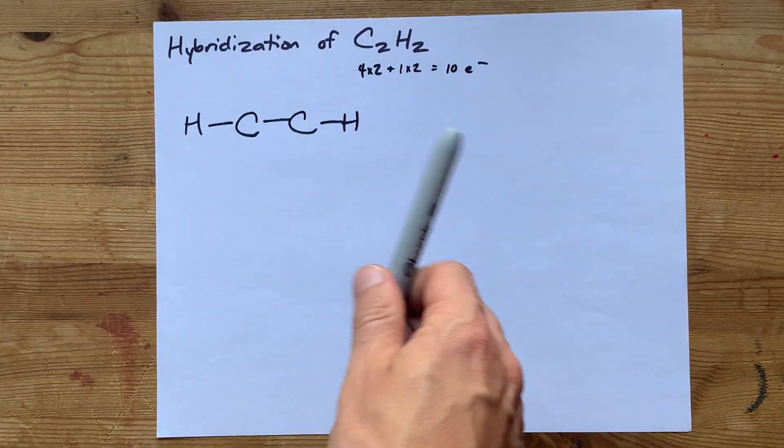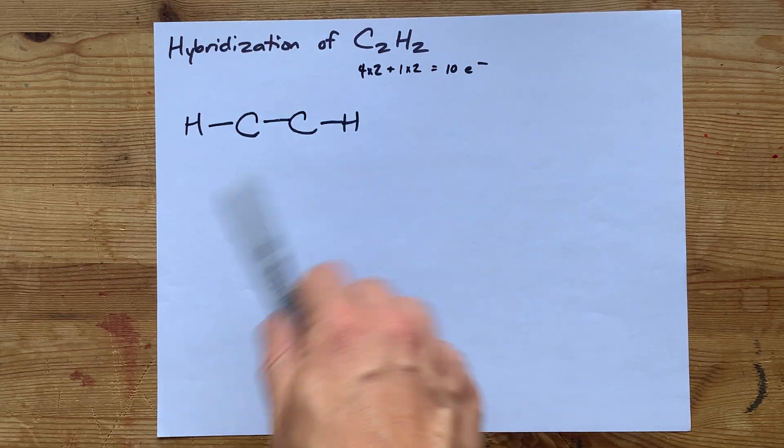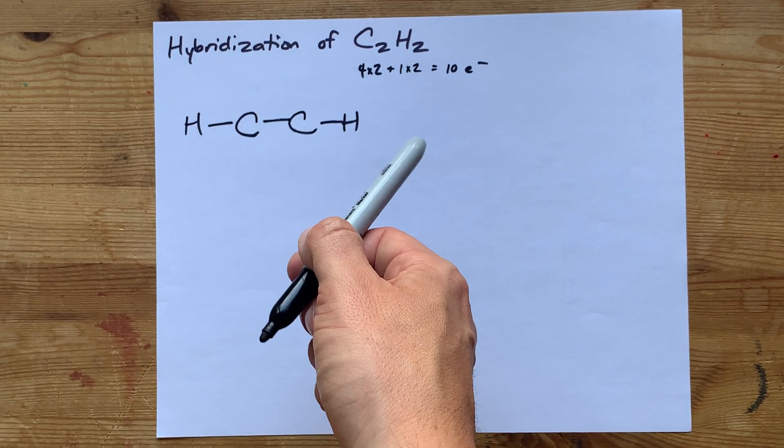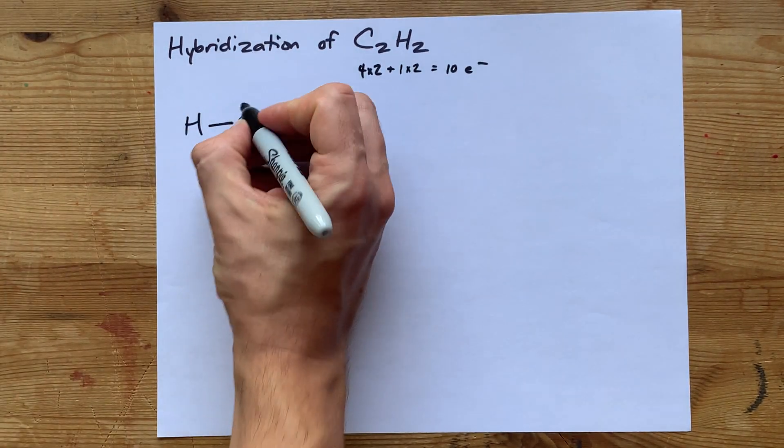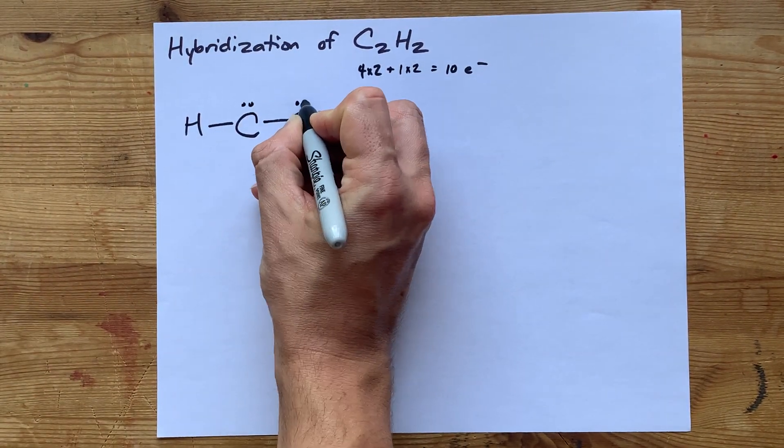What I do usually is I dump my lone pairs on the central atoms if my outer atoms are full. I have 2, 4, 6 electrons so far, 7, 8, 9, 10.